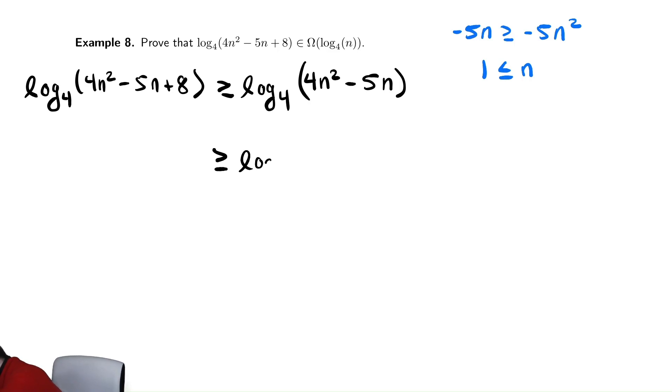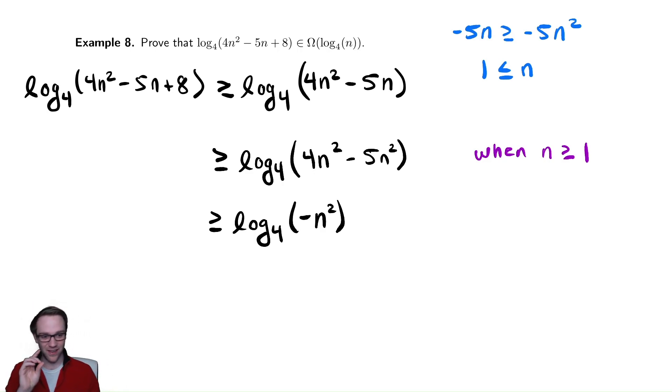This is greater than or equal to log base 4 of 4n² minus 5n². And just like before, we need to make sure to comment that that's only true when n satisfies some inequality. In this case, greater than or equal to 1. And if you're good at math, you might start to recognize that this is a problem. Let's simplify and see why it's a big problem. We have log base 4 of negative n². And if you think back to calculus class, you might go, hold the phone. That's really bad. Log of negative values is entirely undefined. This does not work.